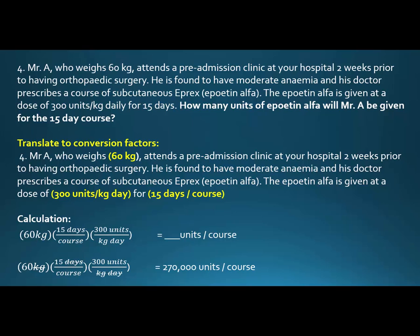So I'll just read it. Number four: Mr. A, who weighs 60 kilograms, attends a pre-admission clinic at your hospital two weeks prior to having orthopedic surgery. He's found to have moderate anemia, and his doctor prescribes a course of subcutaneous epoetin alpha. The epoetin alpha is given at 300 units per kilogram per day for 15 days. How many units of epoetin alpha would Mr. A be given for the 15-day course?